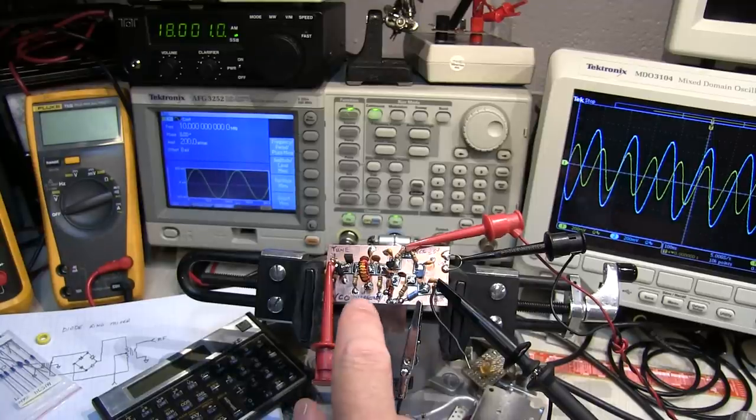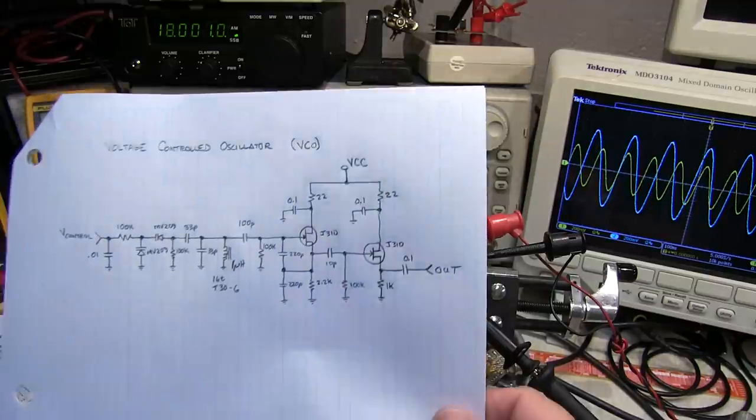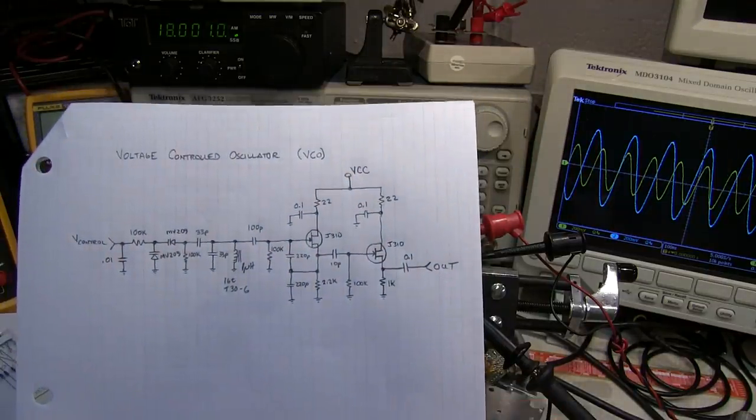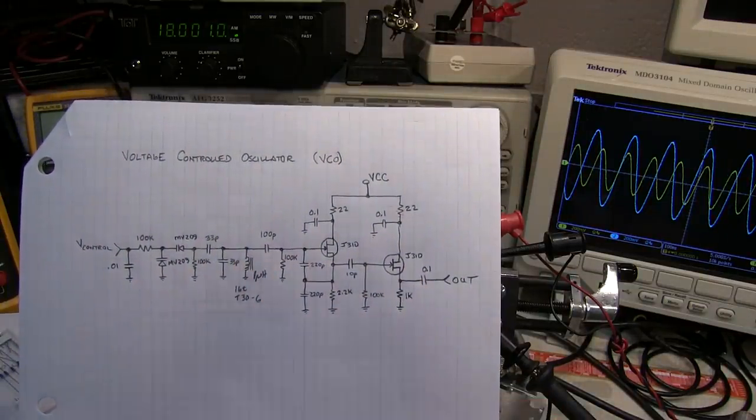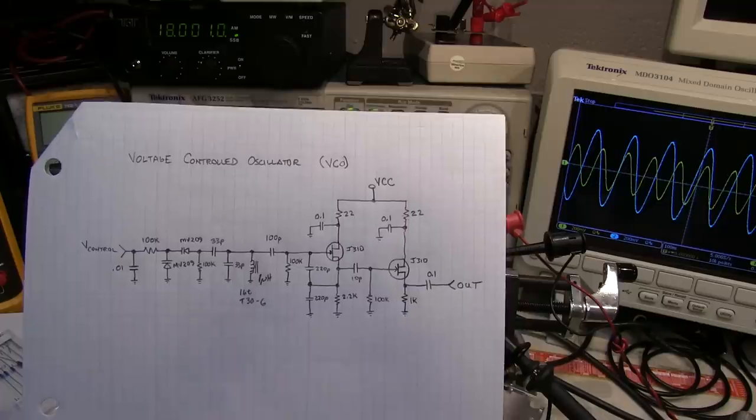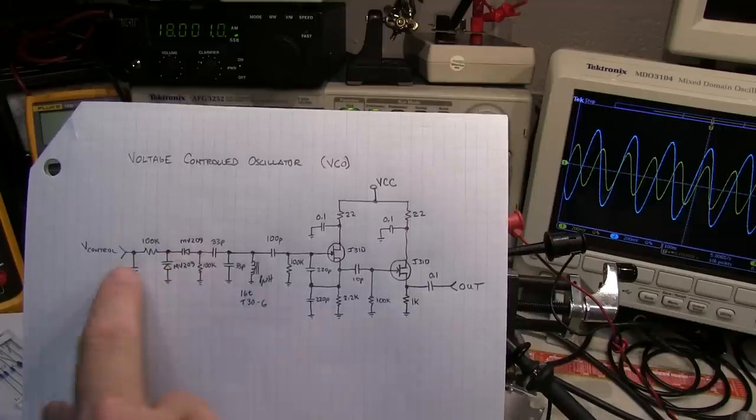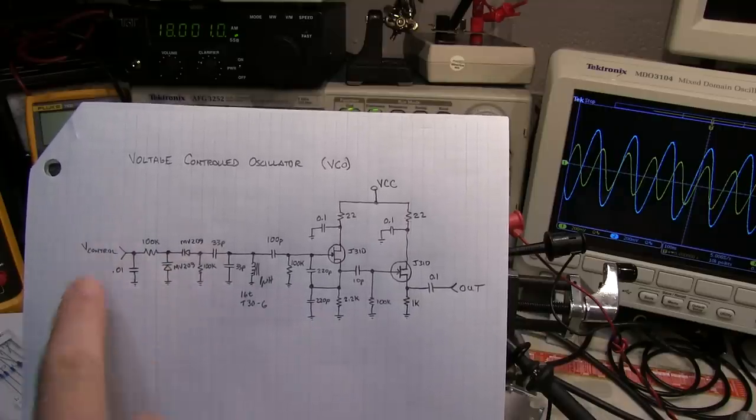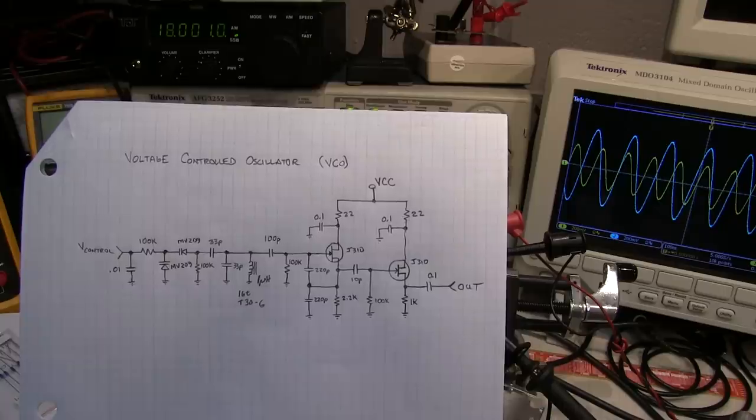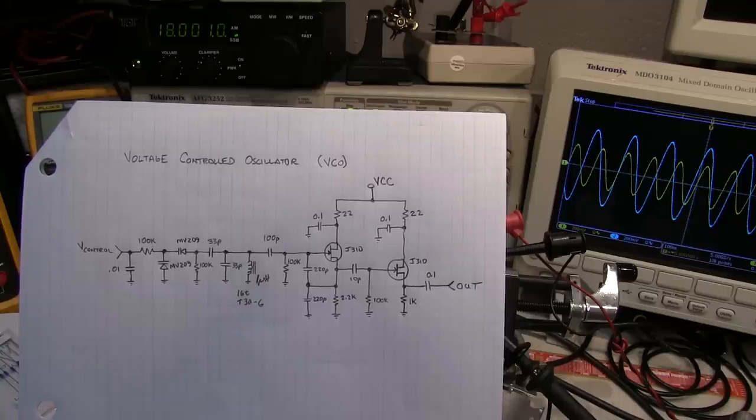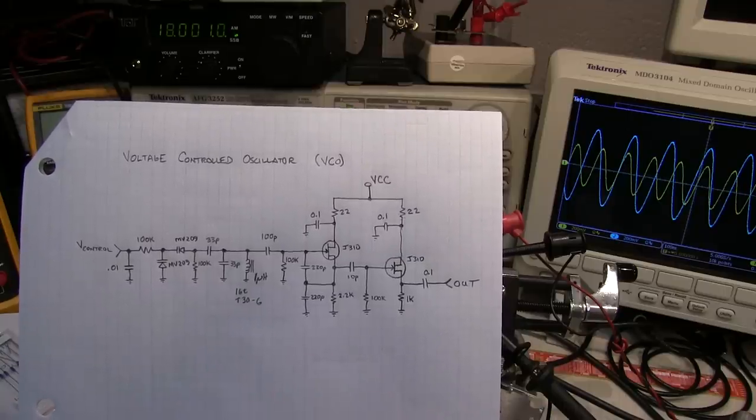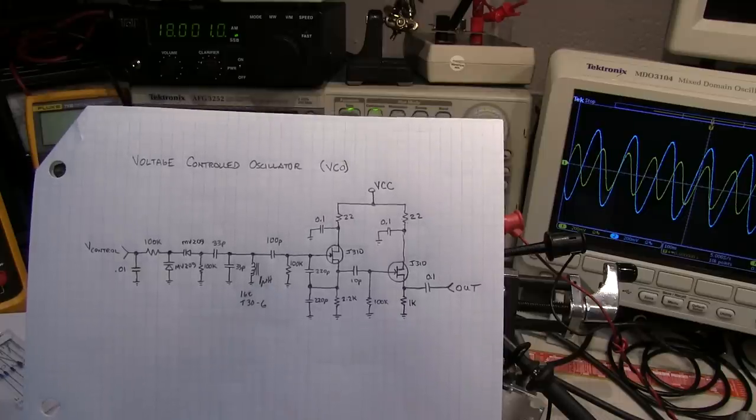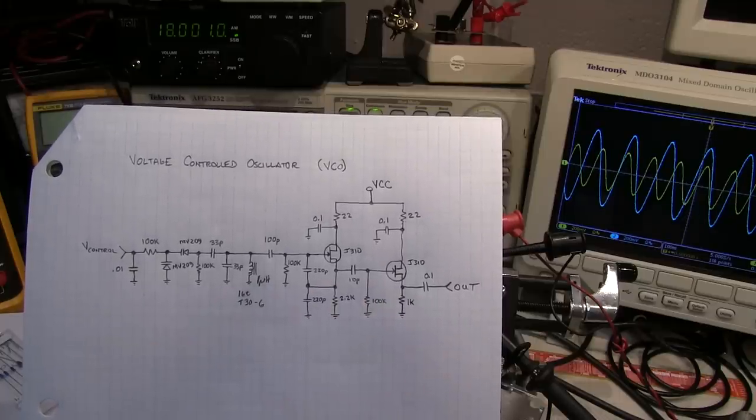The circuit we're using here is a voltage controlled oscillator that I showed in the video about varactor diodes. This is just a simple Colpitts oscillator that has a couple of varactor diodes that can be used to control the frequency of oscillation. We'll use this as an example of how parasitics can affect the operation of the circuit.